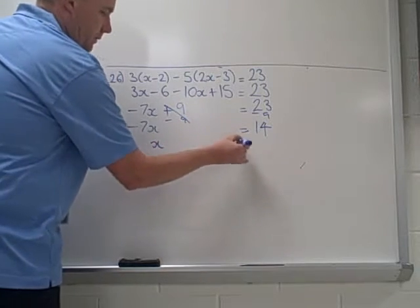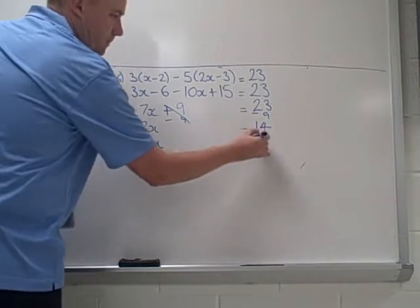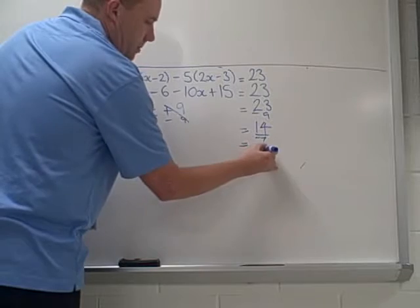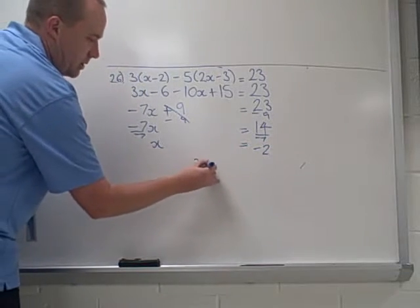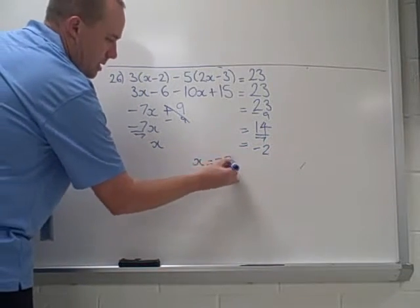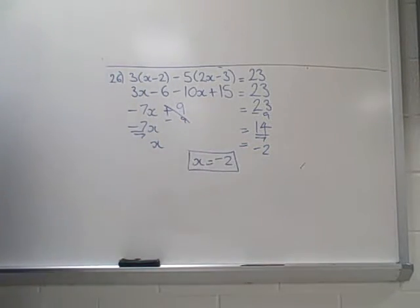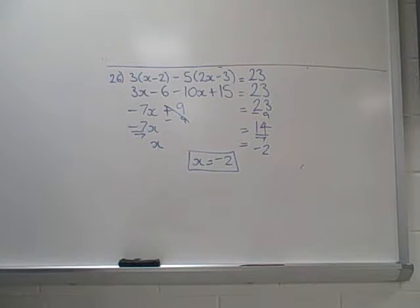And then the final step, just divide both sides by negative 7. And 14 divided by negative 7 is negative 2. So our answer to this question is negative 2. We could also substitute back to check if that answer's correct, if we have time.